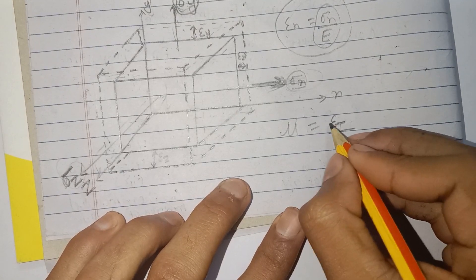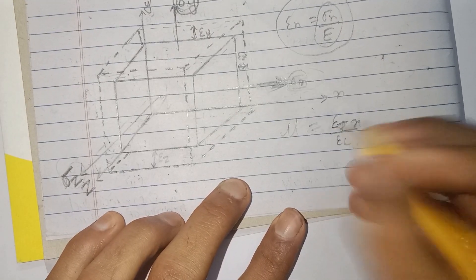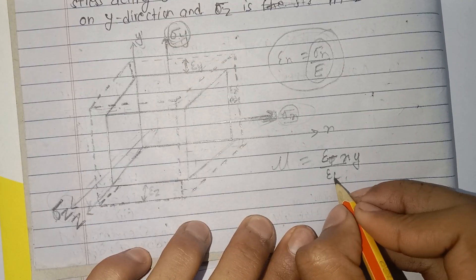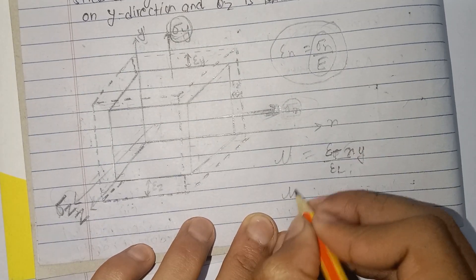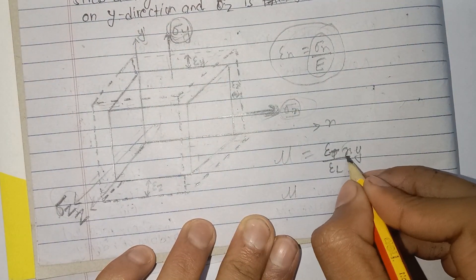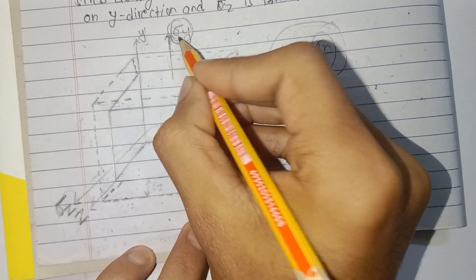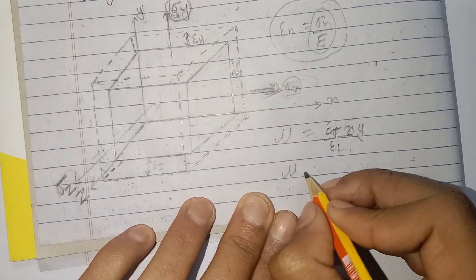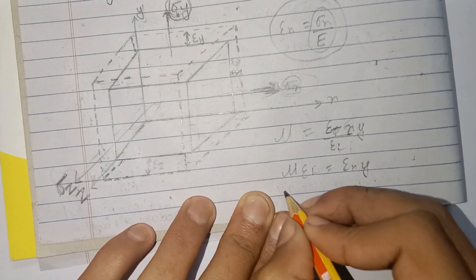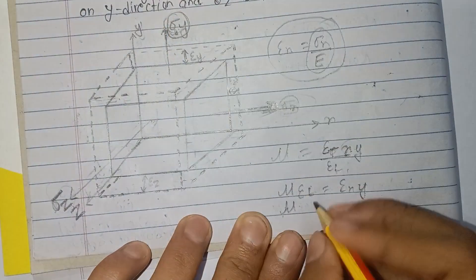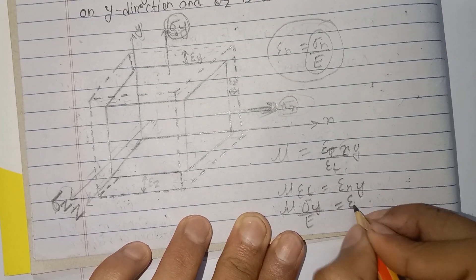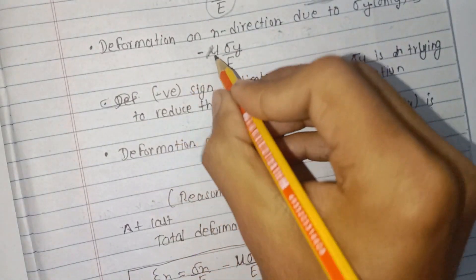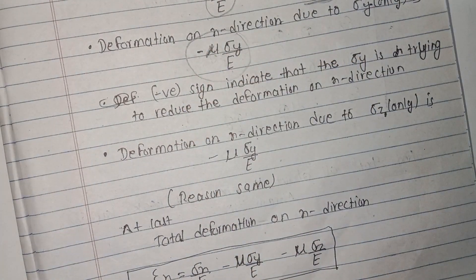The strain in the x-direction due to sigma y — epsilon x due to sigma y — equals negative nu times sigma y divided by E. The longitudinal strain times nu gives the lateral strain. The deformation in the x-direction due to sigma y is negative nu times sigma y by E.